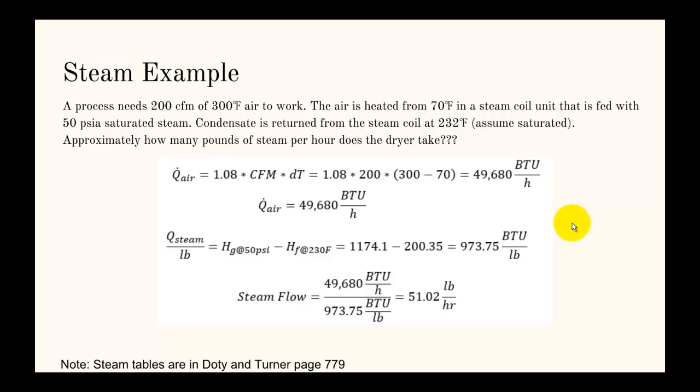Now let's go to a steam example. In this case, whenever you see steam, you want to go to the steam tables. They're in Doty and Turner on page 779. A process needs 200 CFM of 300 degree Fahrenheit air to work. The air is heated from 70 degrees in a steam coil that's fed with 50 psia saturated steam. The condensate is returned from the steam coil at 232 degrees Fahrenheit, and we're going to assume that condensate is saturated. We need to figure out how many pounds of steam per hour this dryer takes.